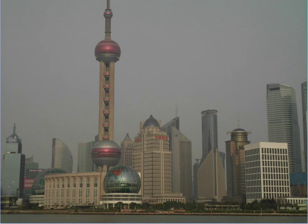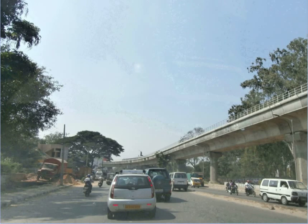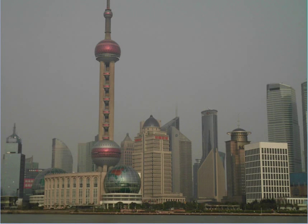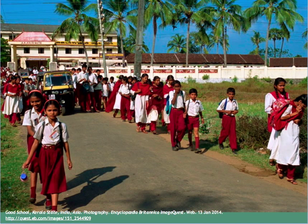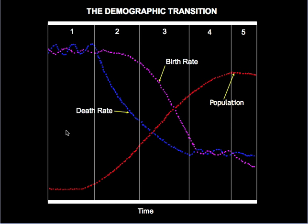Today both China and India enjoy unprecedented economic growth as the quality of life for millions begins to improve. China's radical one-child policy is credited with reducing its population by a massive 0.4 billion, while the South Indian state of Kerala boasts of its population control through education and an improved quality of life for all its citizens. During the 20th century, it became clear that as countries develop, they undergo a demographic transition.